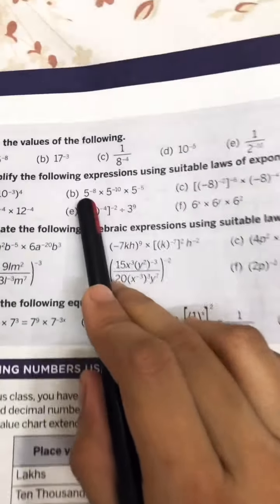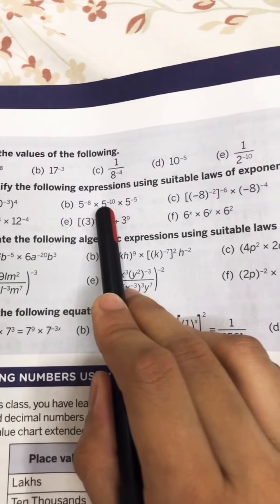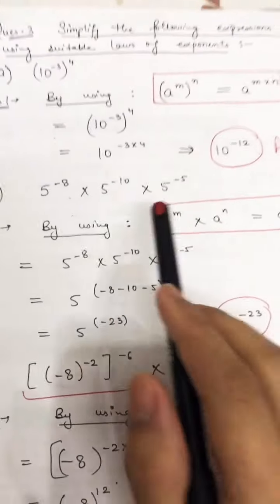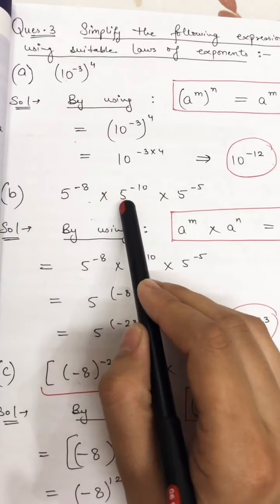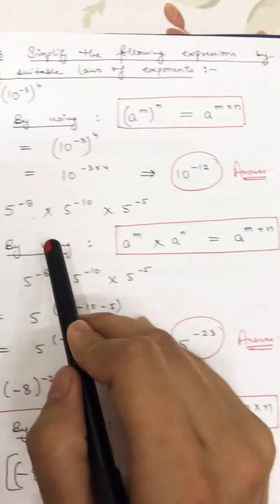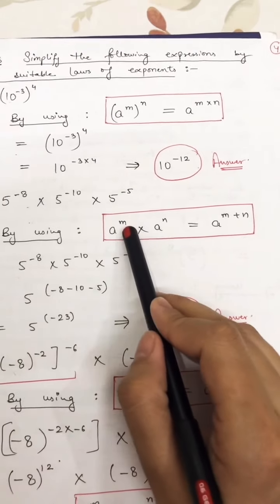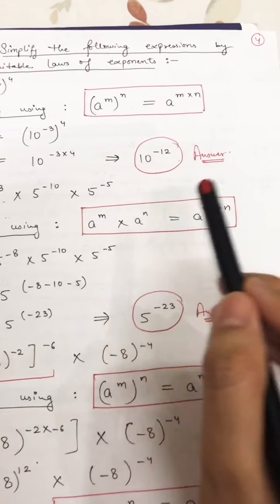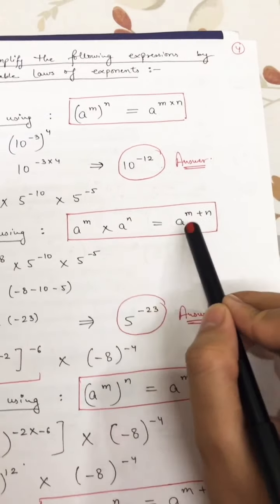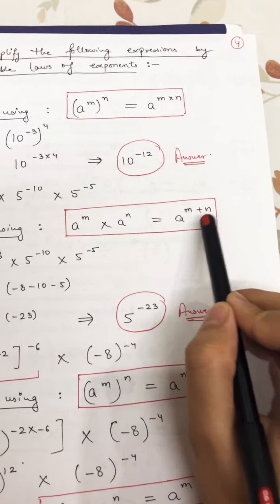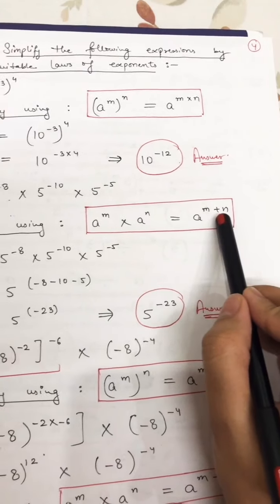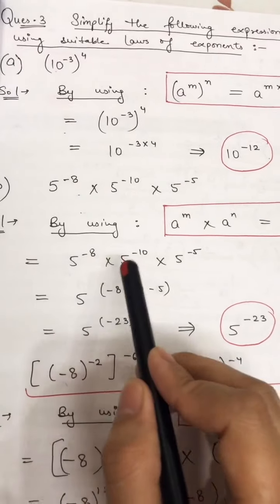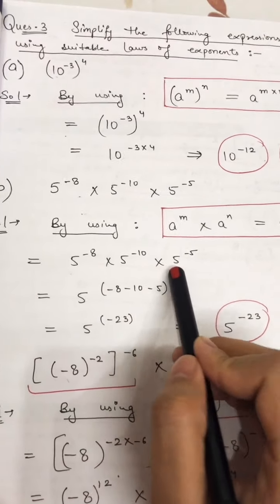Part B is 5 raised to power minus 8, multiplied by 5 raised to power minus 10, multiplied by 5 raised to power minus 5. The base is same and powers are different, so we use the law: a raised to power m multiplied by a raised to power n equals a raised to power m plus n. When bases are the same and in multiplication, we add the powers.